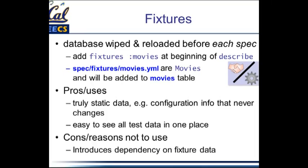If you have some fixtures, those are loaded in before every spec is run. So if I had some movies I wanted to put into my database, I would create a YAML file with some movie information, and at the top of my test file, right inside my describe block, I would add fixtures colon movies. Anytime I run any spec, all of the movies in my YAML file will be preloaded into the database and my test can assume that they're there.